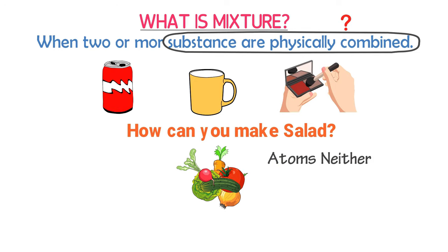Some other examples of mixtures: when salt and water are combined together, we get a mixture — here, salt is a compound and water is also a compound. When you put iron foils into water, you get a mixture — here, iron is an element and water is a compound. When you add iron to gold jewelry, you get a mixture — here, iron is an element and gold is also an element. Thus, combining different substances physically gives us a mixture.